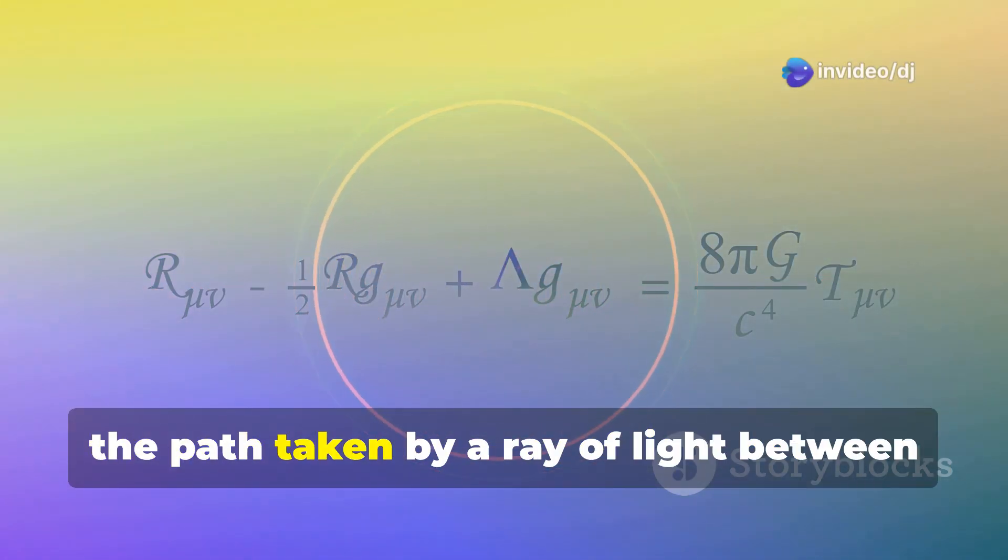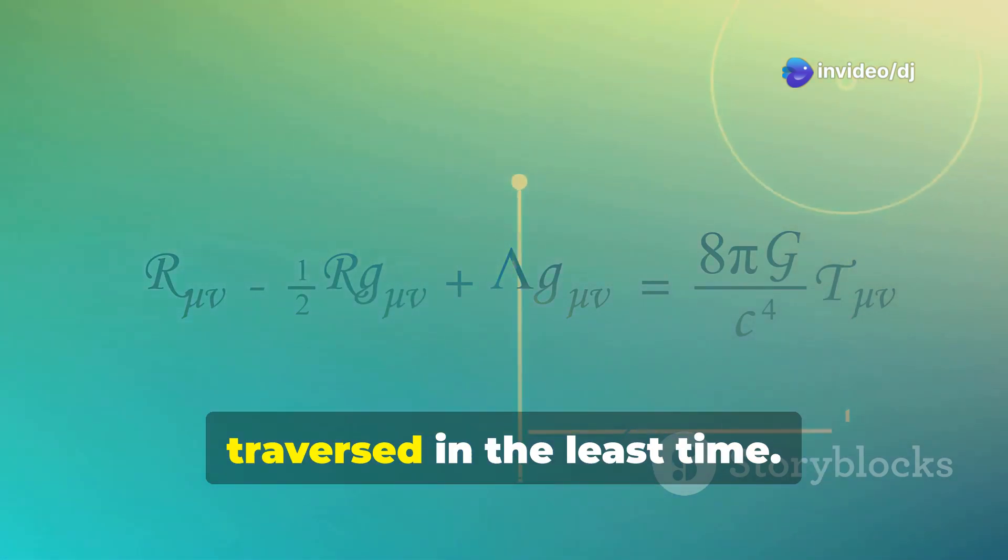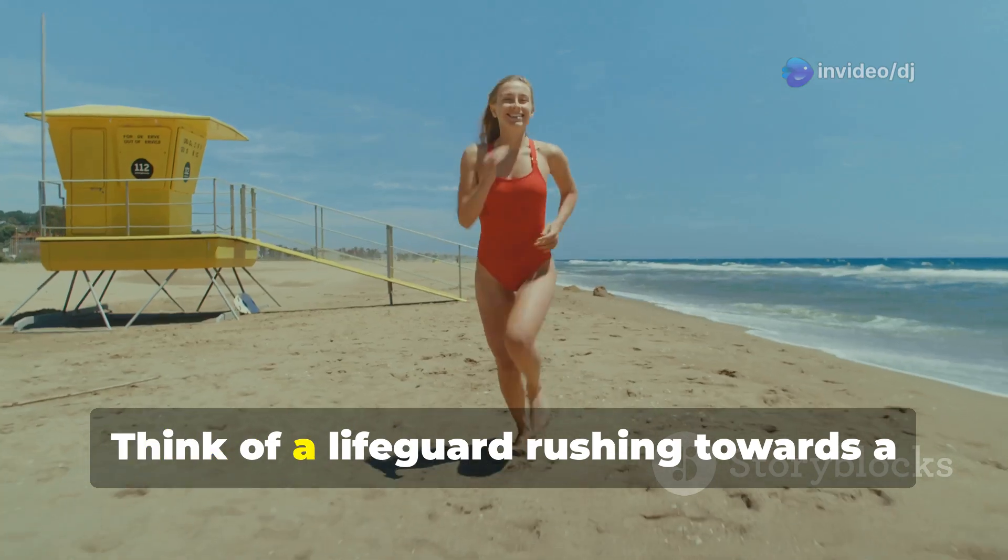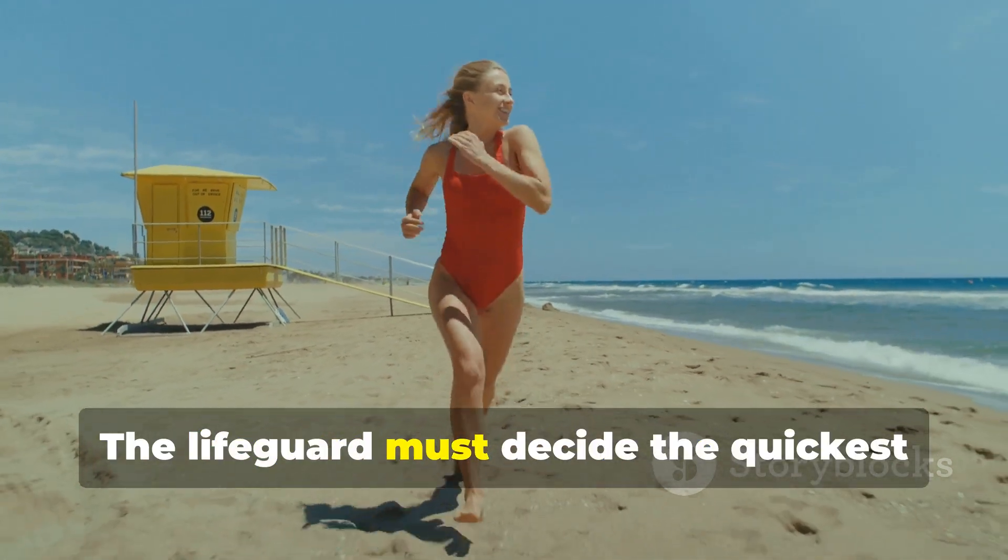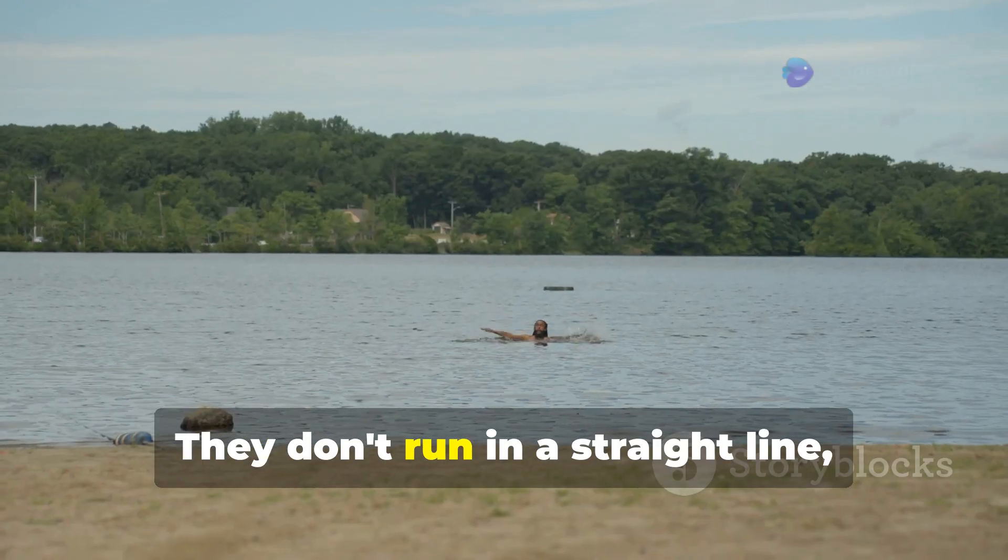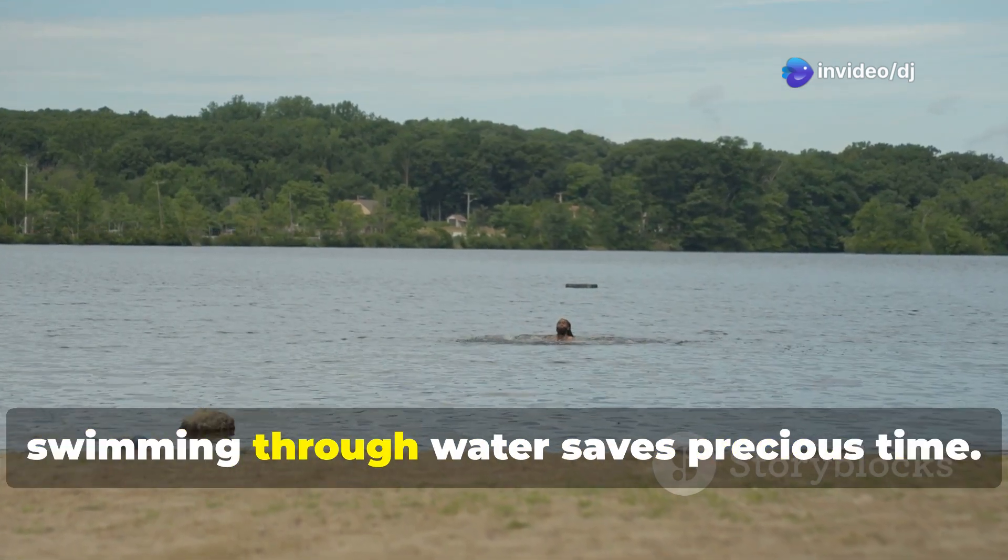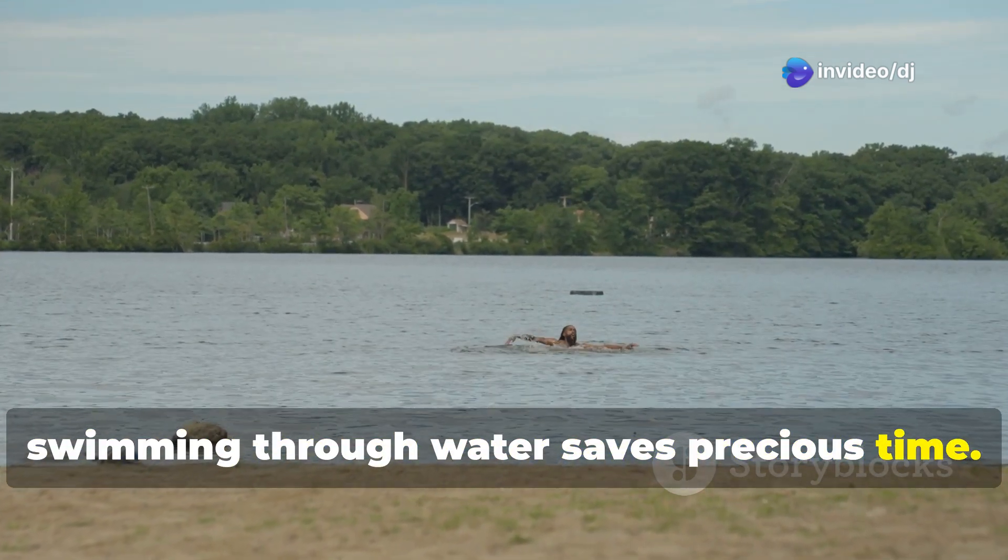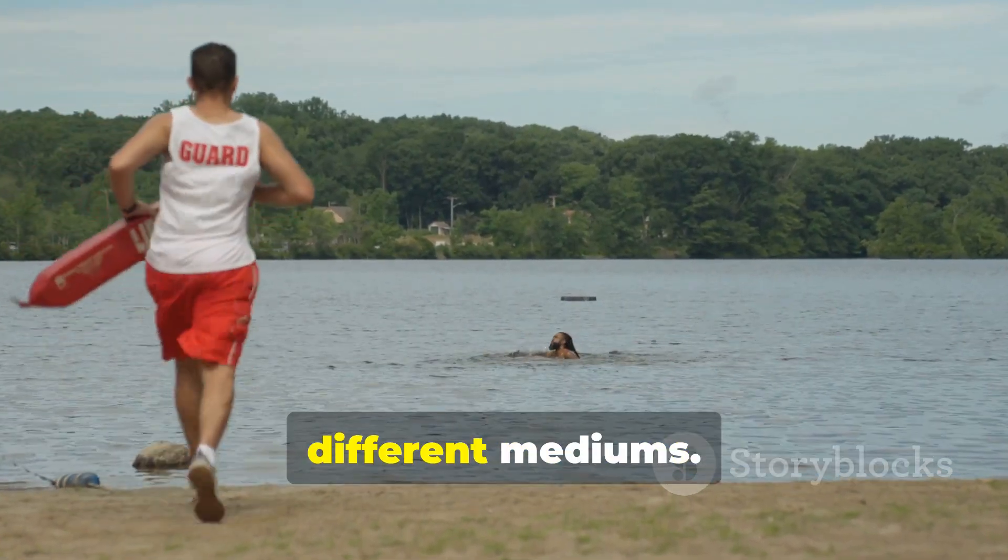According to this principle, the path taken by a ray of light between two points is the path that can be traversed in the least time. Think of a lifeguard rushing towards a swimmer in distress. The lifeguard doesn't run in a straight line but at an angle, because running faster on sand than swimming through water saves precious time. This analogy helps us understand how light behaves when it moves through different mediums.